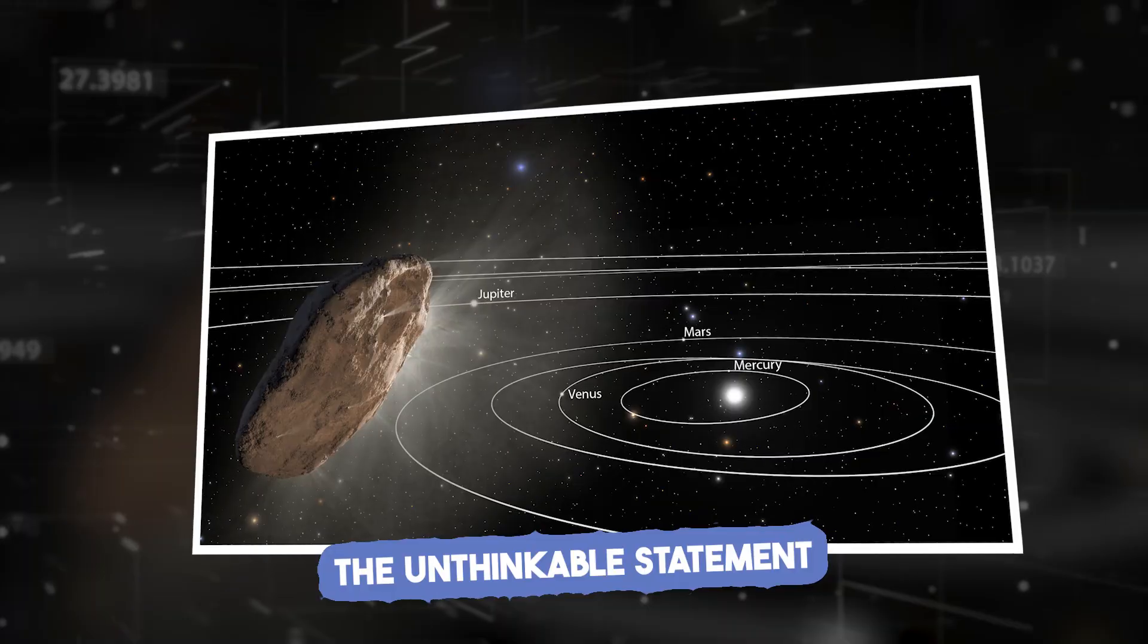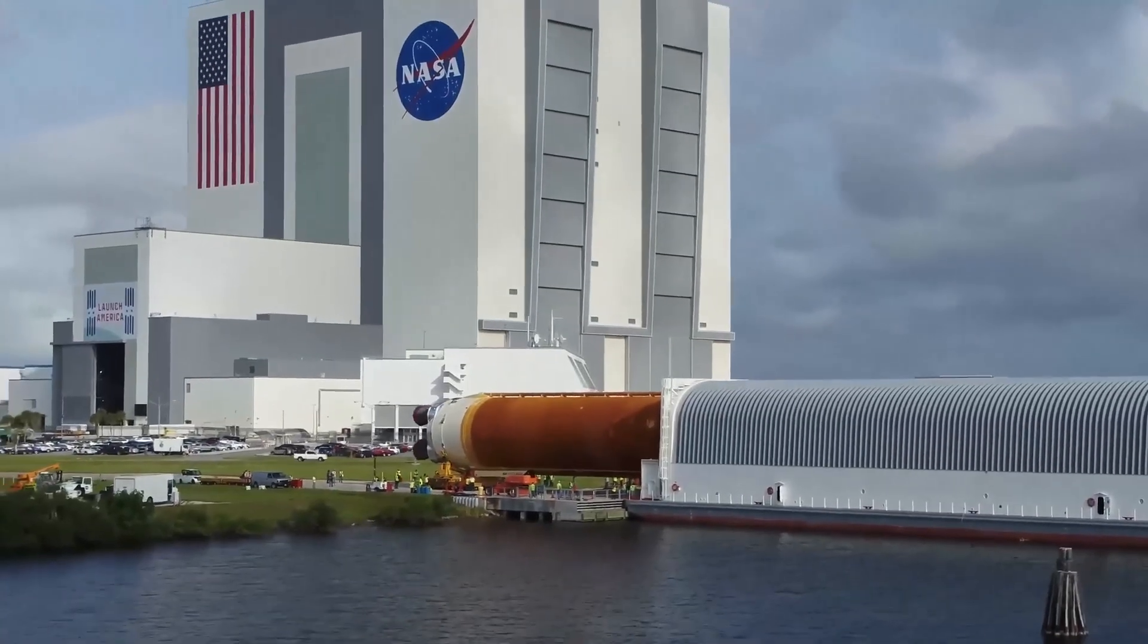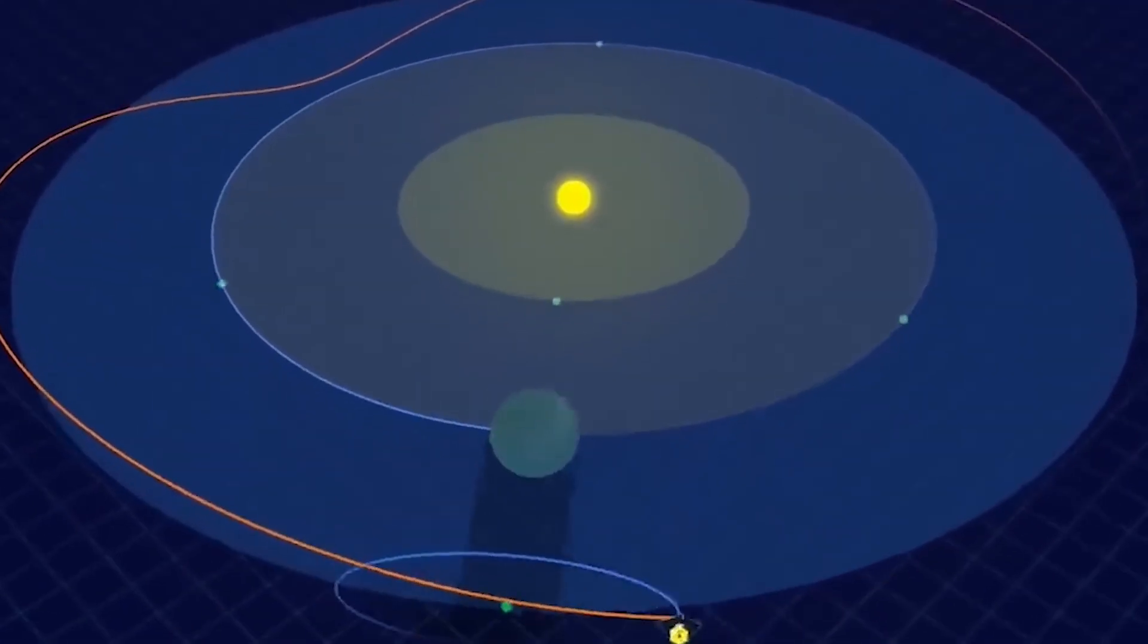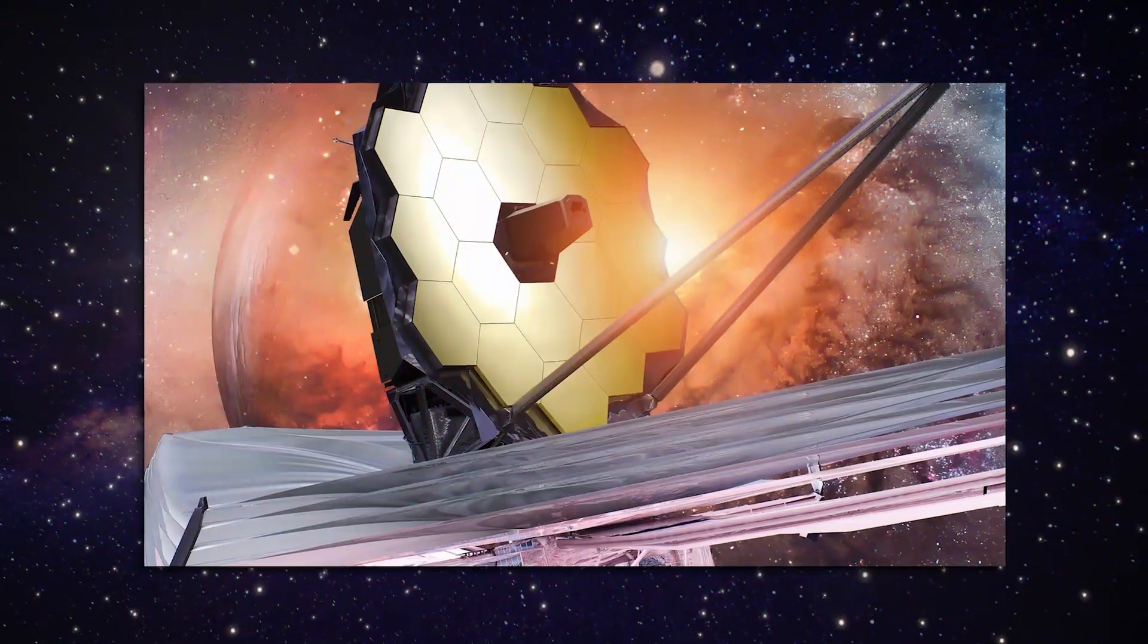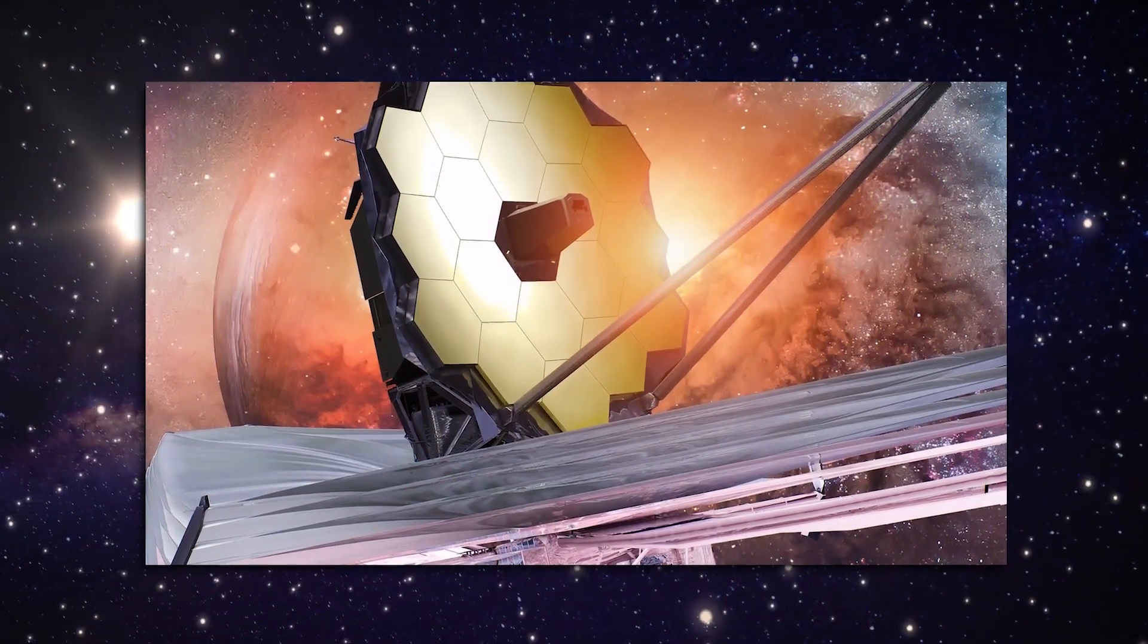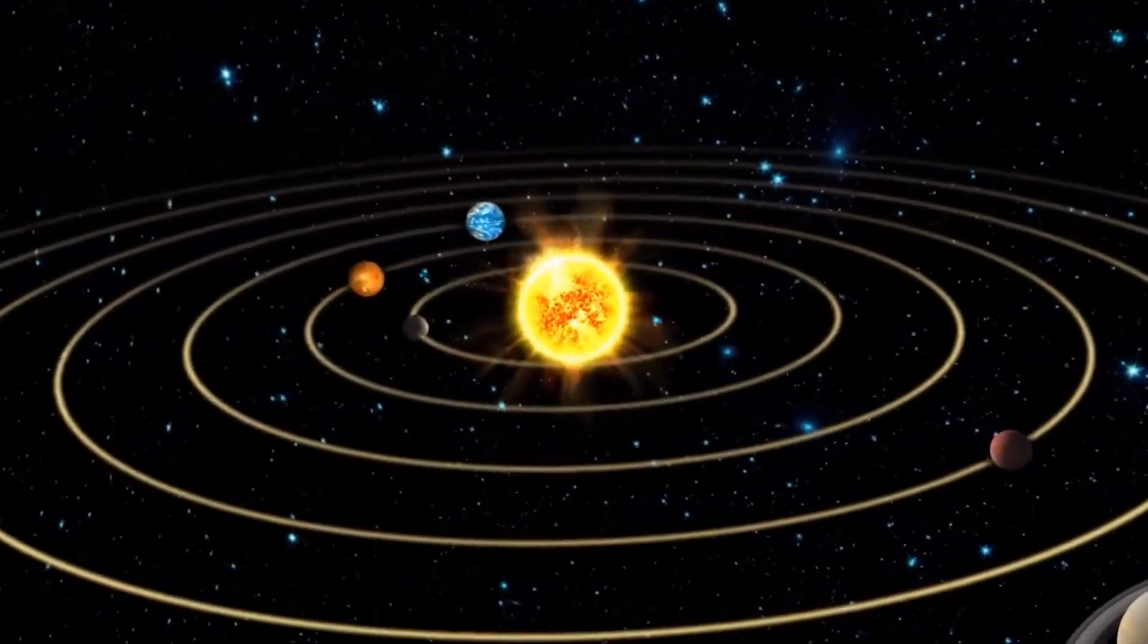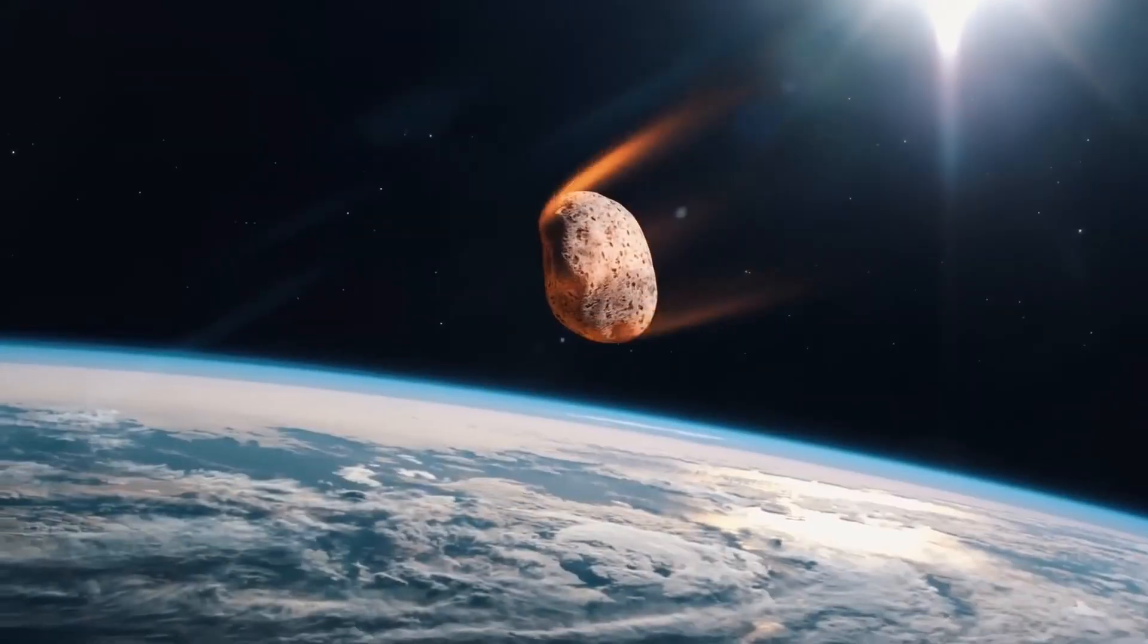The unthinkable statement. On April 17, 2024, a routine NASA press release broke the rhythm of space science. Buried in its sterile wording was a phrase that should never have existed in official channels. Unusual magnetic features, further analysis ongoing. That line referred not to a planet, not to Jupiter, not to Saturn, but to a cometary interstellar fragment, 3-I-S-ATLAS.